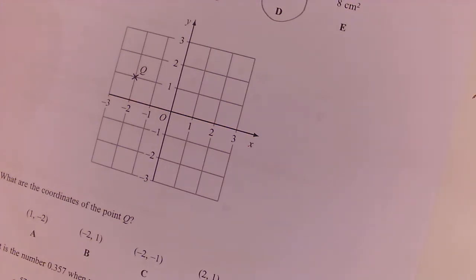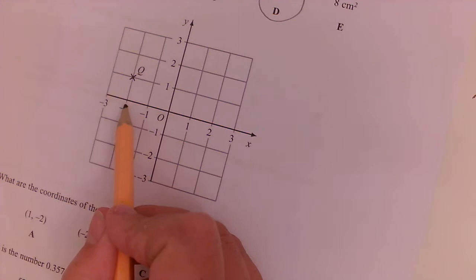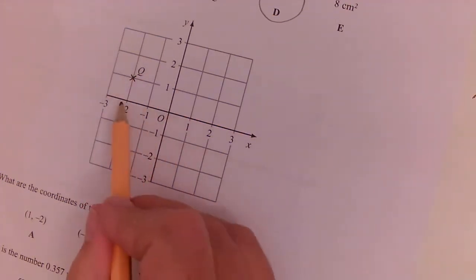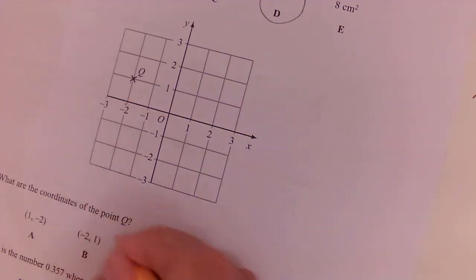Question 13. What are the coordinates of P? So remember, it goes along the corridor, then up the stairs. So X and then Y. So it's minus two, one. Minus two, one is B.